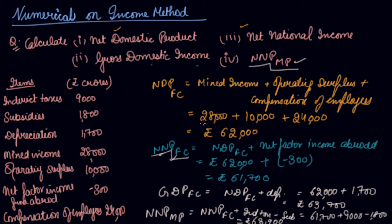In this way you can calculate all the other aggregates using the given information by first calculating one aggregate. I hope you have completely understood this question on the income method.